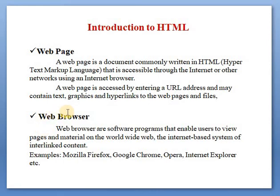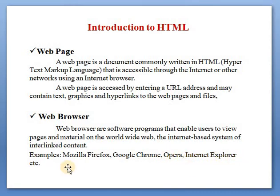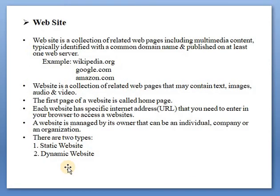What is a web browser? A web browser is a software program that enables users to view pages and material on the World Wide Web — the internet-based system of interlinked contents. Examples include Mozilla Firefox, Google Chrome, Opera, Internet Explorer, etc.